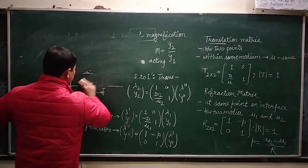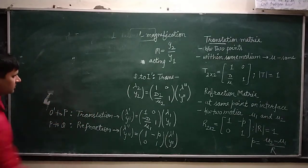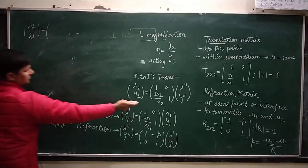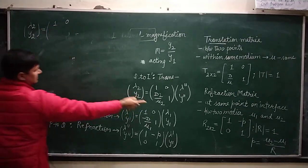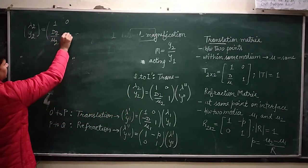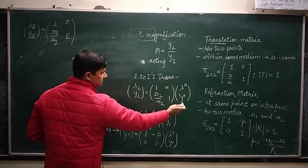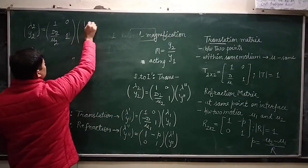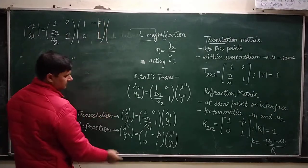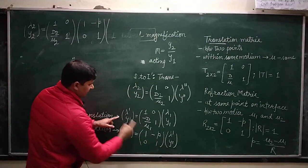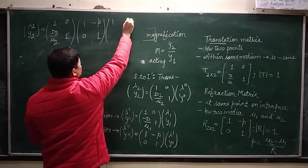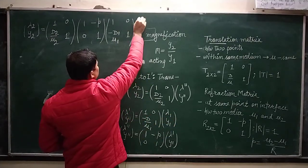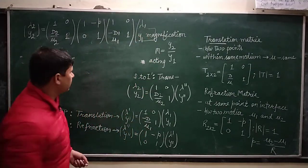Now we have to establish a connection between the optical coordinates of the image and the optical coordinates of the object. We start from the last matrix and substitute the value of lambda'' and y'' from the refraction matrix, then substitute lambda' and y' from the first translation matrix. This gives: [lambda2; y2] = [1, 0; D2/mu2, 1] × [1, -P; 0, 1] × [1, 0; -D1/mu1, 1] × [lambda1; y1].